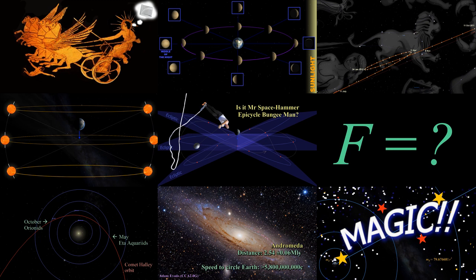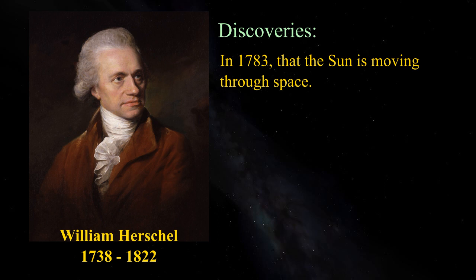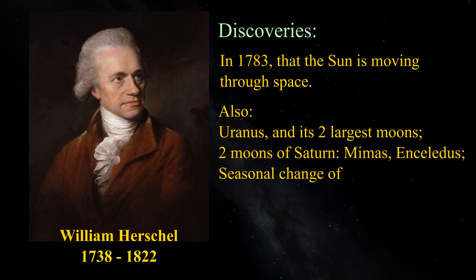William Herschel was the first to discover that the Sun is moving through space, a feat he accomplished in 1783 by measuring and studying the proper motion of stars. He also established the direction of motion towards the star Vega and the constellation Hercules.